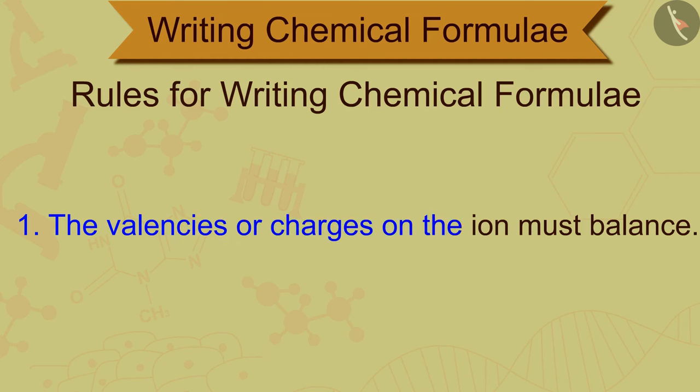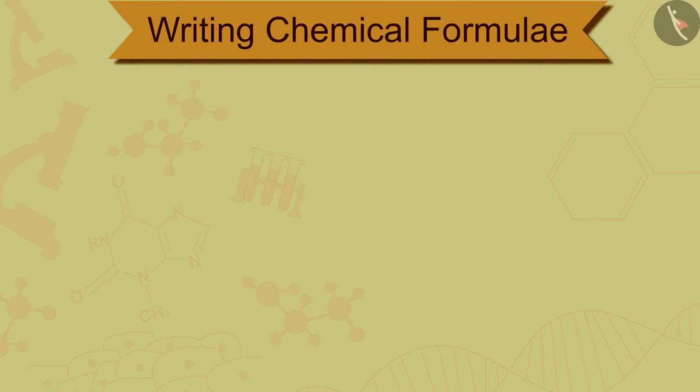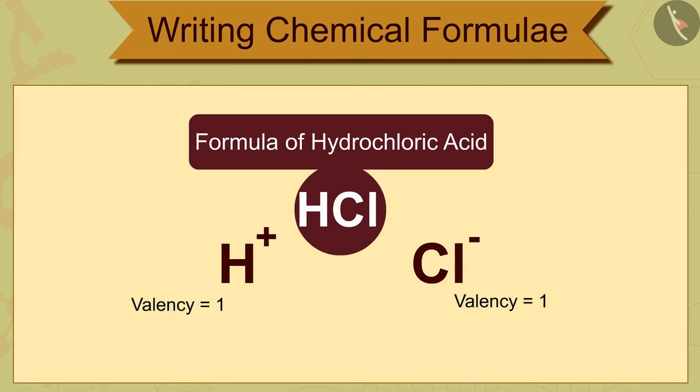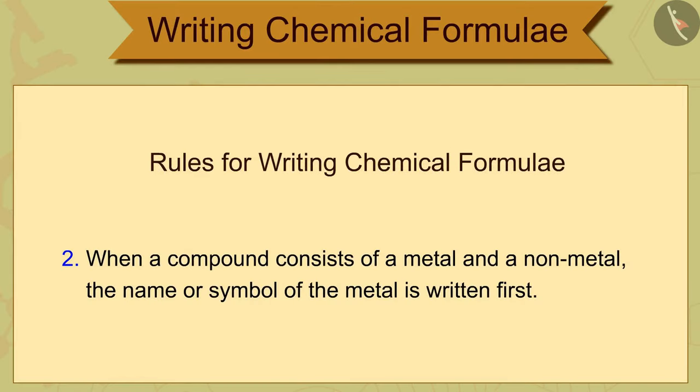For example, the formula of hydrochloric acid compound is HCl, where the valency of both hydrogen H+ and chlorine Cl- is 1, which is balanced in this formula. Rule 2: When a compound consists of a metal and a non-metal, the name or symbol of the metal is written first.